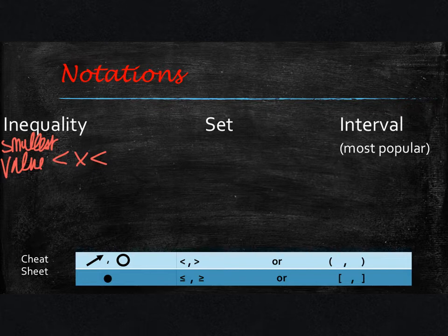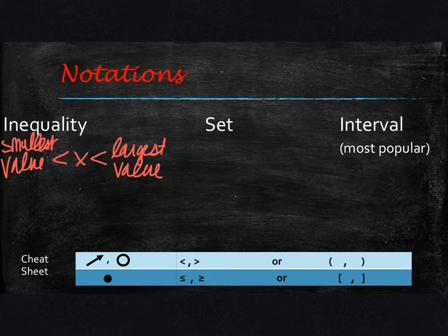On the right side, you will put the largest value that you have. This is when you have a between statement — when you have a beginning and an end. If you have an arrow on one end, then you would just use one less than or greater than, or less than or greater than or equal to, and we'll see more of that in class.